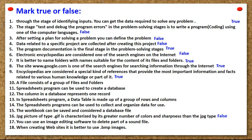A file consists of a group of files and folders. Spreadsheets program can be used to create a database. The column in a database represents one record in a spreadsheets program. A data table is made up of a group of rows and columns. The spreadsheets programs can be used to collect and organize data for use. The workbook can be saved and considered a database file.